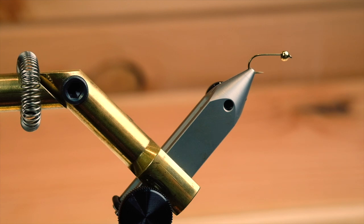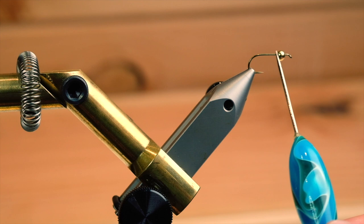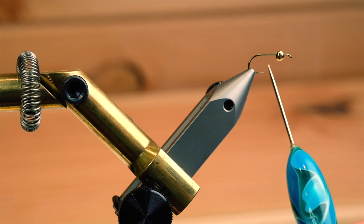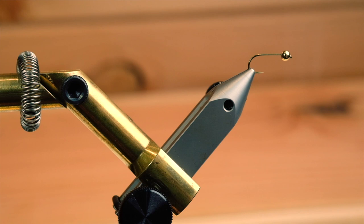Thank you for watching. Today we'll tie a really classic nymph, and I've chosen to show you the one with a bead, which isn't the classic but it's the pattern I fish the most. I've put a Daiichi 1190 barbless hook size 12 and a 2.8 millimeter tungsten bead in gold. So to start off this Prince Nymph...